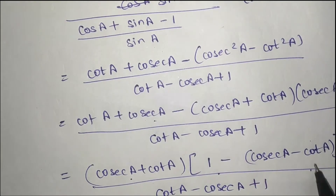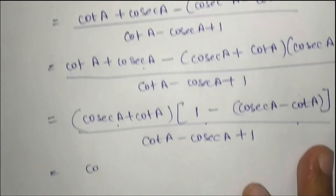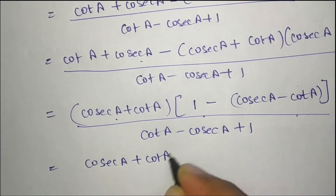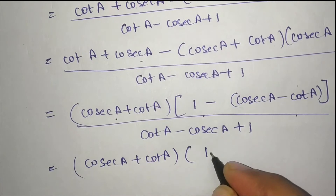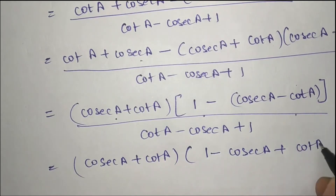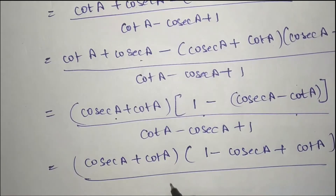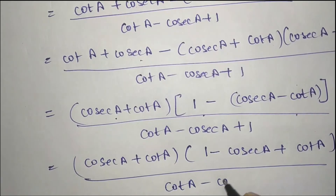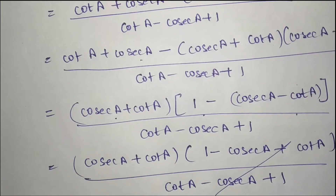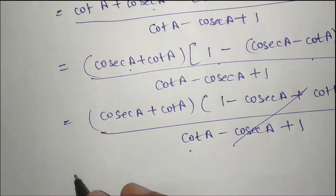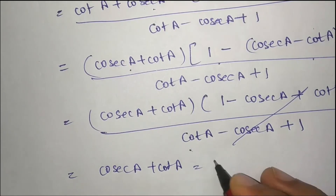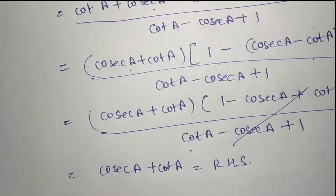Now since we have a minus and cot a, when we open the bracket the sign changes to plus. So we get (sec a + cot a) times (1 minus sec a plus cot a) in the numerator. The denominator is (cot a minus sec a plus 1). This is the same expression, so it cancels, and what is left is sec a plus cot a, which is our right hand side.